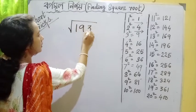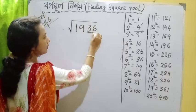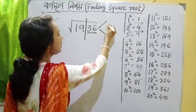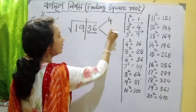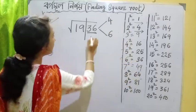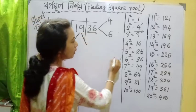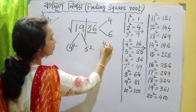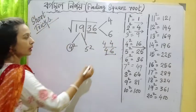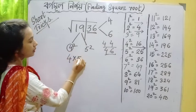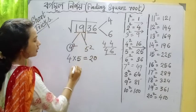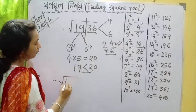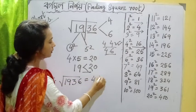1, 9, 3, 6 — a four-digit number. First step. We choose 4. 14 and 46. 4 into next number 5 is 20. This is 19, less than 20. Less than means we choose the lesser number. That means root over 1936 is the answer — 44.